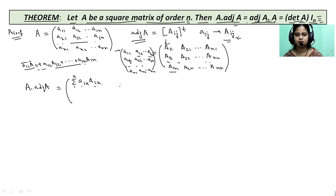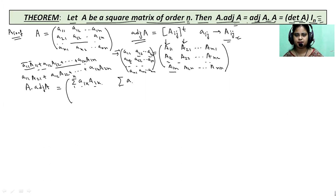For the second position of the first row, we multiply the first row of A with the second column of adjoint A. Then we have a_11·A_21 plus a_12·A_22, and a_1n·A_2n. So here we can write the sum as the summation of a_1k·A_2k. Similarly, the last position in the first row gives the summation of a_1k·A_nk.